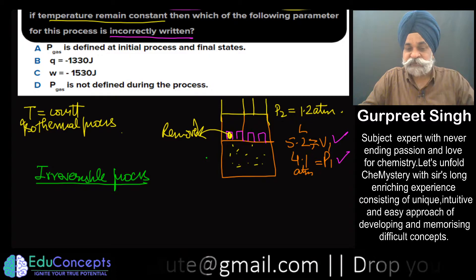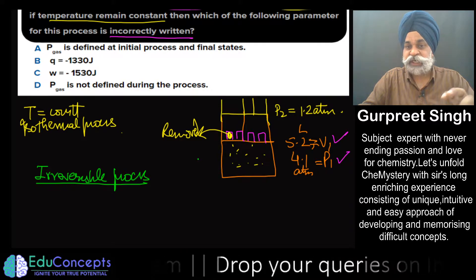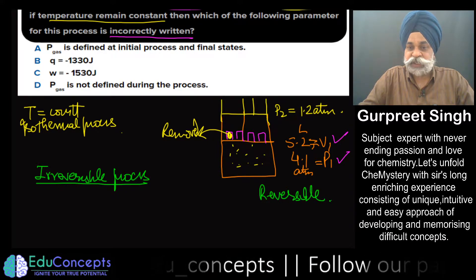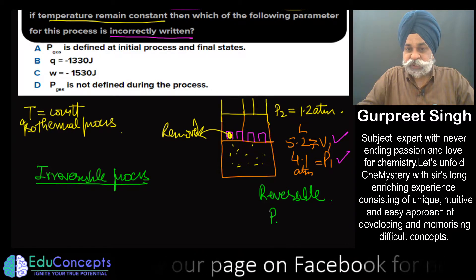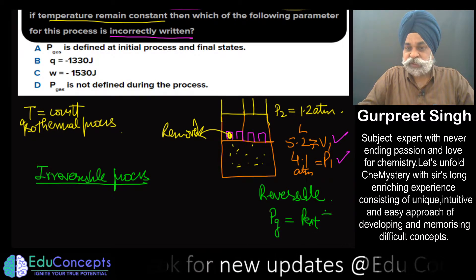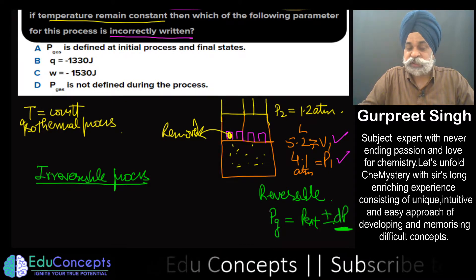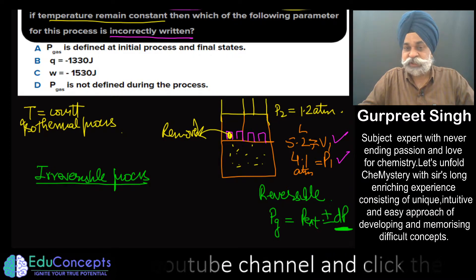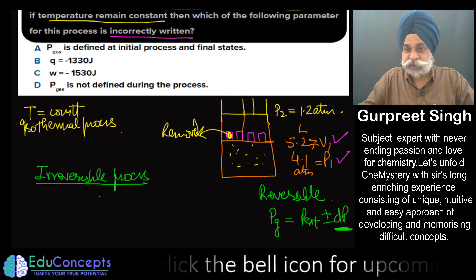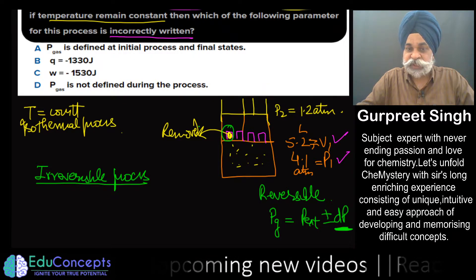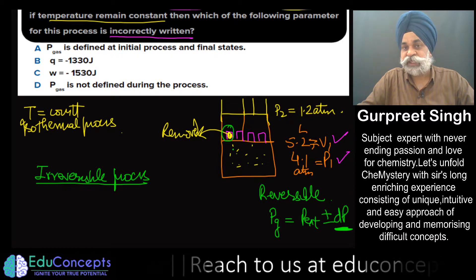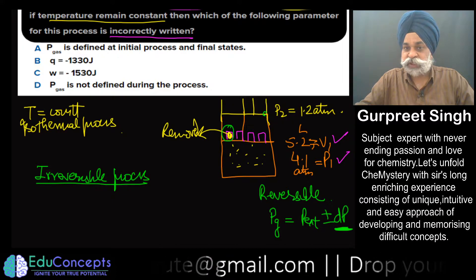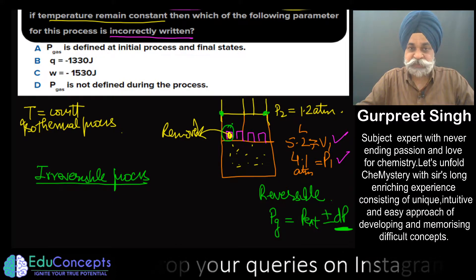An irreversible process is one in which the driving and opposing pressures have quite a large difference, compared to a reversible process where P_gas and P_external differ by only an infinitesimally small amount. In an irreversible process, a good amount of weight is removed at once, and as a consequence the piston moves rapidly to achieve the final pressure of 1.2 atm, where it stops.